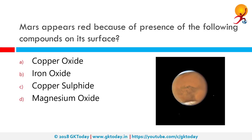Mars appears red because of the presence of which of the following compounds on its surface? Mars is known as the red planet because it looks red from Earth. The reddish color comes from the high concentration of iron oxide compounds, which is essentially rust, in the rocks of the Martian surface.